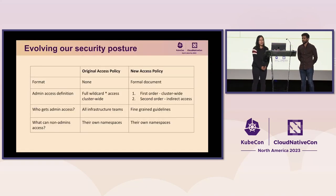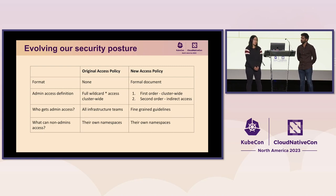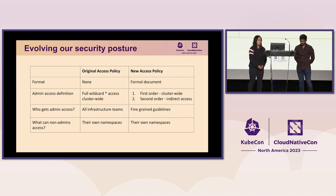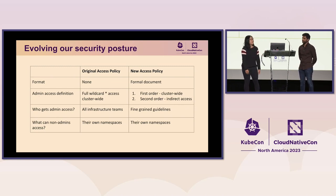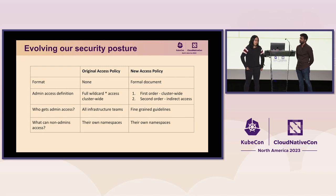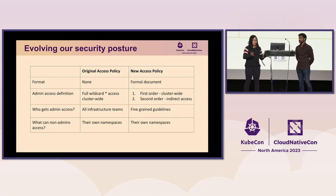Here's a table comparing our original access policy — and I say that in quotes because it was not a formalized policy. We defined admin access as people with full permissions to do anything cluster-wide, and that was granted to the infrastructure team. Non-admins, so application teams, just had namespace-scoped permissions. We created a new access policy because we didn't want to give so many engineers full cluster-wide access, and because this was more complicated, we needed to put it in a formal document.